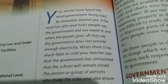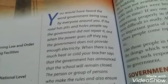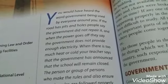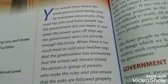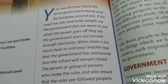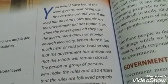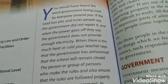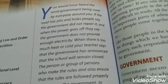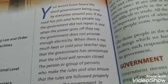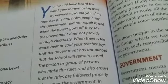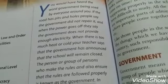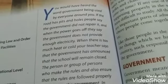First, we discuss the meaning of government. You would have heard the word 'government' being used by everyone around you. If roads are bad or have holes, people say the government did not repair it. When power goes off, they say the government does not provide enough electricity. When there is too much heat or cold, your teacher says the government has announced that school will remain closed.